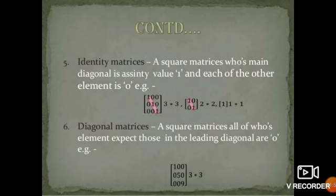Identity matrices: a square matrix. For example, the order of the matrix is 3 by 3. All diagonal elements are zero.